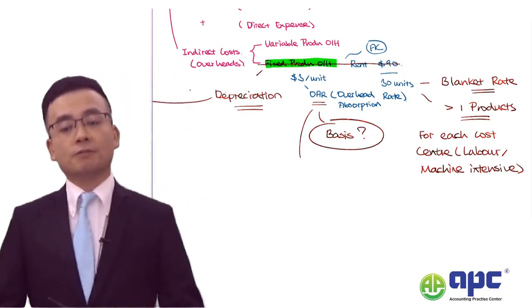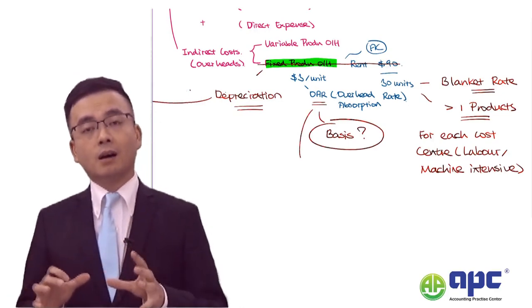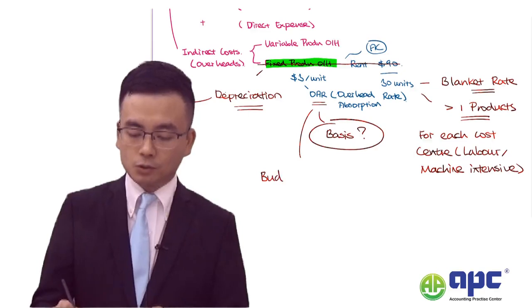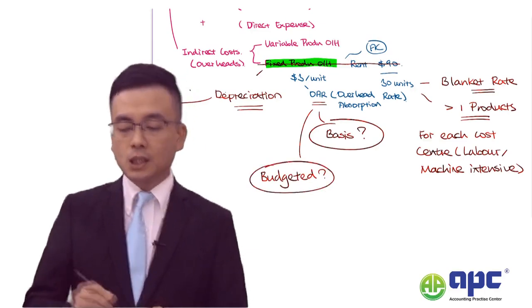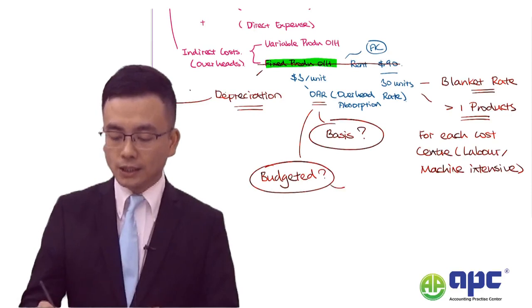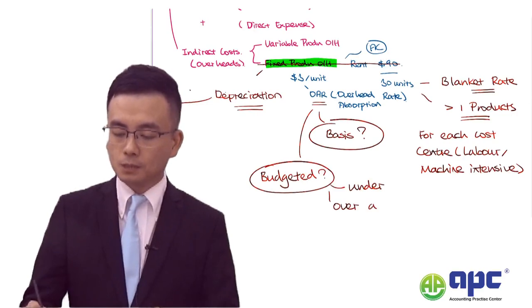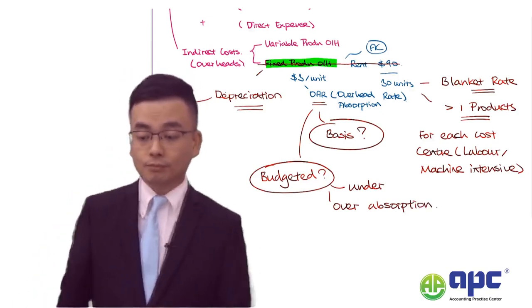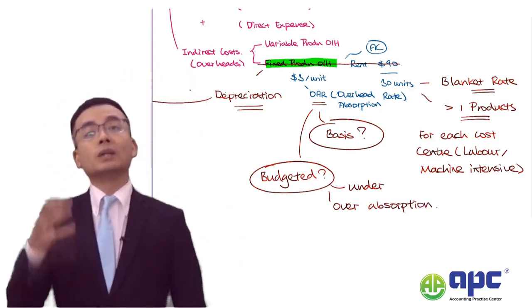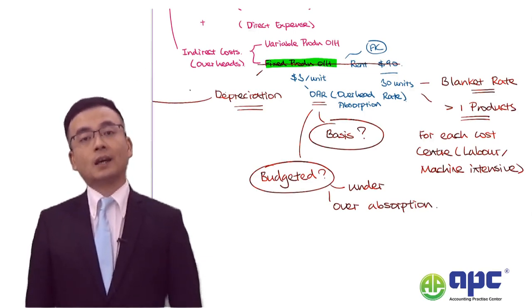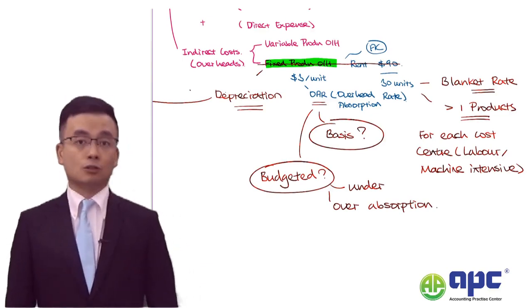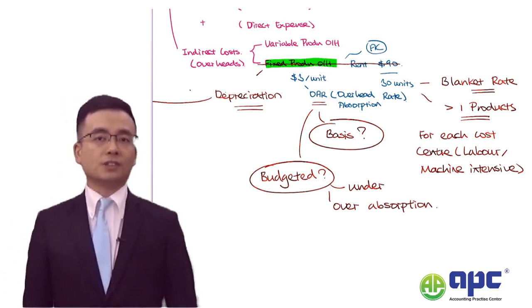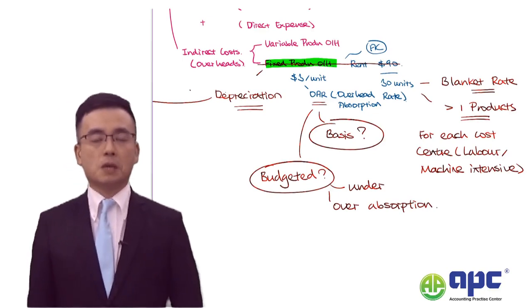The second point about the OAR is that it uses budgeted figures — estimates of what may happen in the future. Therefore, it will result in under or over absorption of overhead adjustments in your calculation. We need to check whether the business is adjusting this in the cost of sales in the P&L at each period end. That's important.